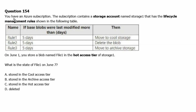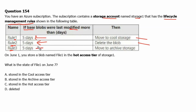Question 154. You have an Azure subscription. The subscription contains a storage account named storage1 that has lifecycle management rules shown in the following table. Rule 1: if a base blob was last modified more than 5 days ago, it moves to cool storage. Rule 2: triggers after 5 days of modification and deletes the blob. Rule 3: triggers after 5 days and moves to archive storage. On June 1st, you store a blob named file1 in the hot access tier of storage1. What is the state of file1 on June 7?